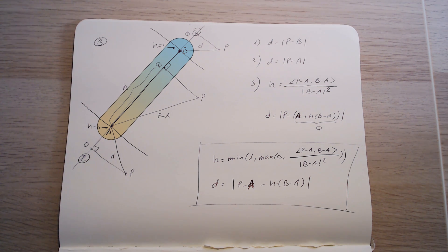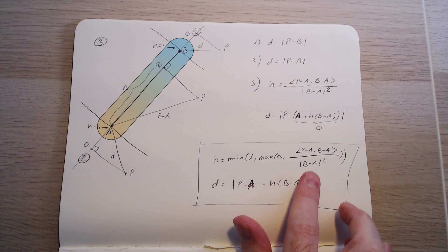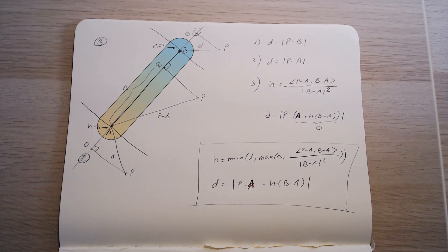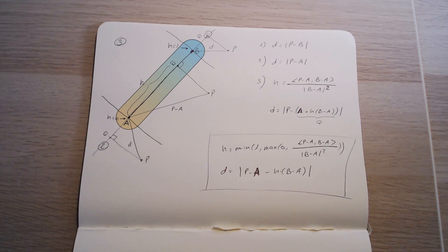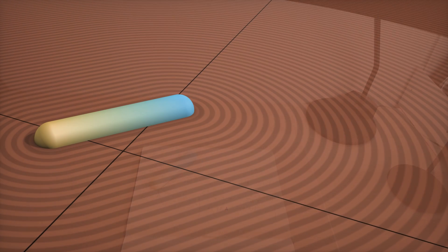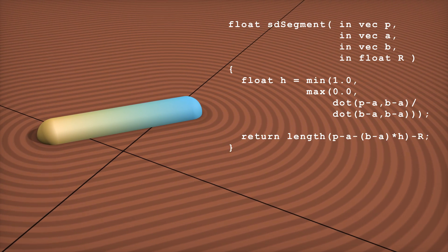Note that nowhere in the code are we explicitly using x, y, or z coordinates, or a cross product, or anything that locks us into a given number of dimensions. We did all operations only using dot products and distances, which generalize naturally to any number of dimensions. This means the same expression works in 3D. The code for the SDF of a line segment is a direct translation of this expression.